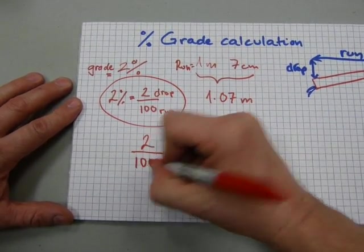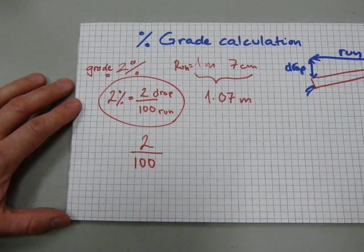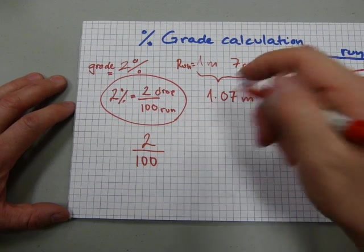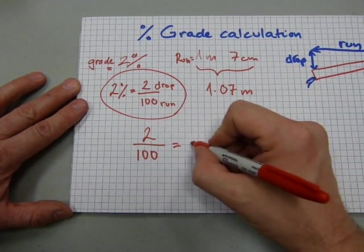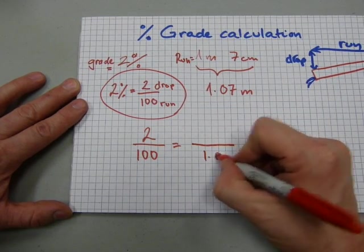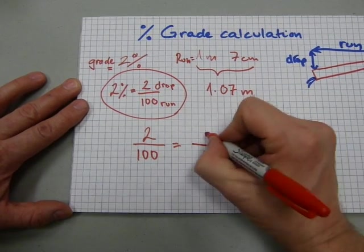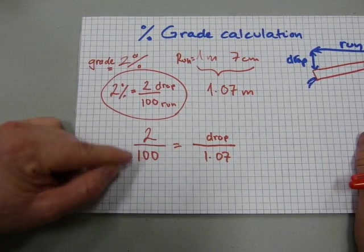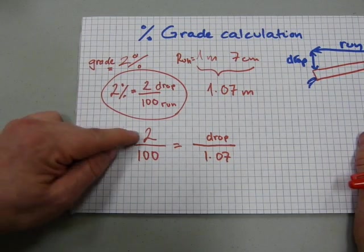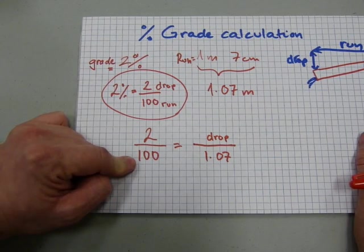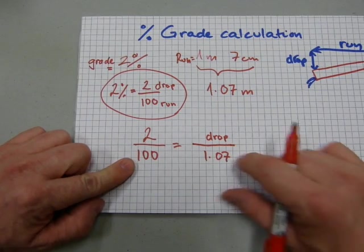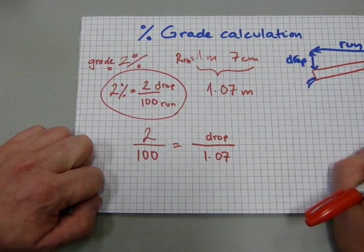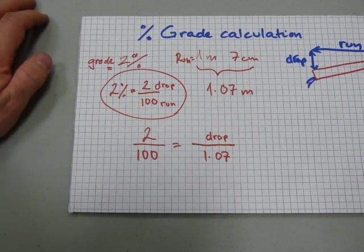This is how this calculation goes. I'm going to need an equivalent fraction. Welcome to ratio and proportion. Do review the ratio and proportion titles in the playlist. So 2 over 100, and we're going to need to make an equivalent fraction here. 1.07 goes there, and the drop amount will be here. I need an equivalent fraction that's something over 1.07. To do that, we're going back to ratio and proportion calculation.